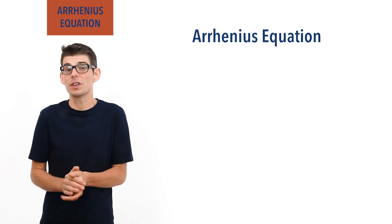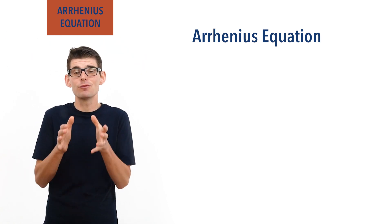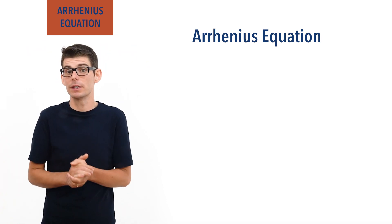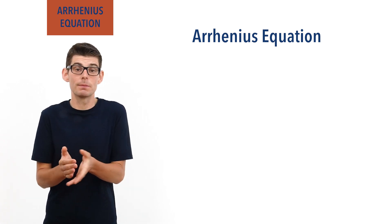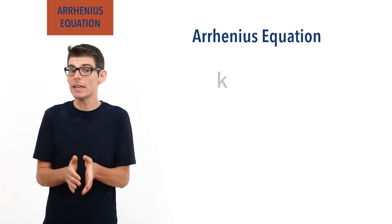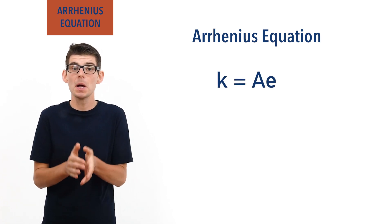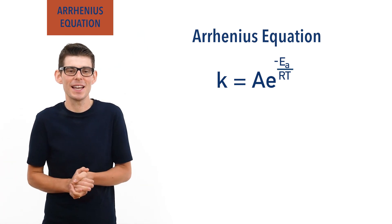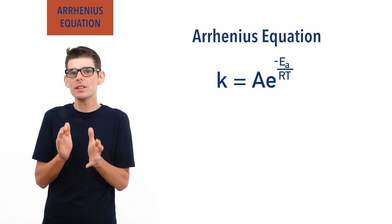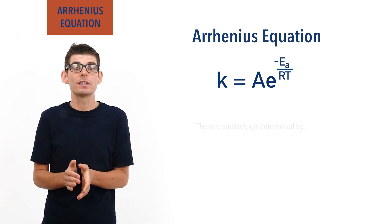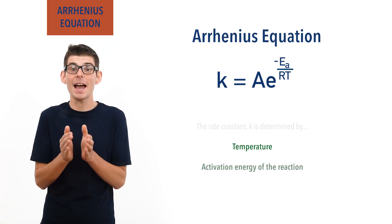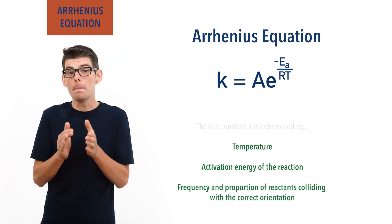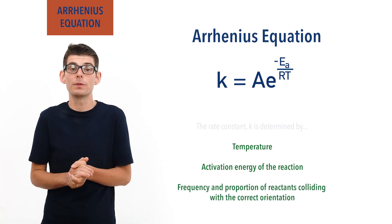The Arrhenius equation can look intimidating to students at first, and it's really important you understand the chemistry behind it before worrying too much about the maths. The equation, in its most common form, is: rate constant k equals A multiplied by e to the power minus Ea over RT. Let's break the equation down. The rate constant k is based on the temperature, activation energy, and the proportion of frequency of collisions occurring with the correct orientation — meaning the Arrhenius equation must include these things in it.